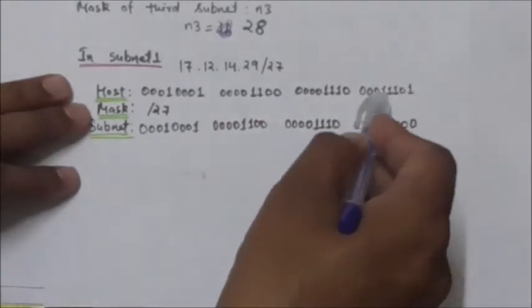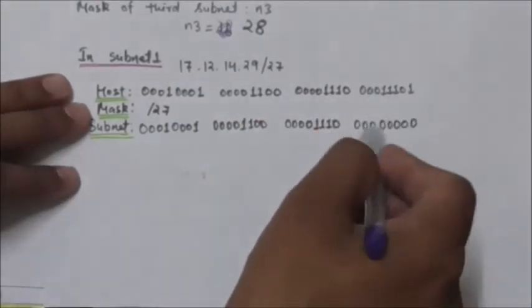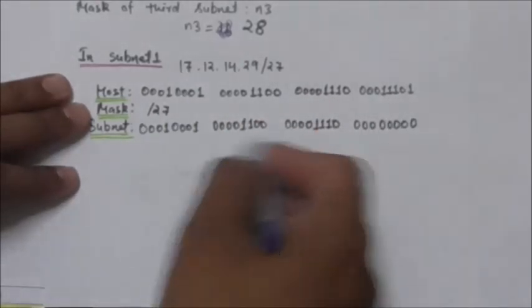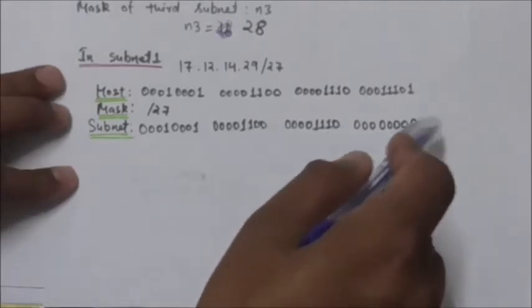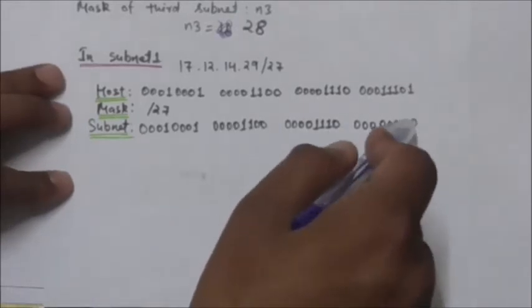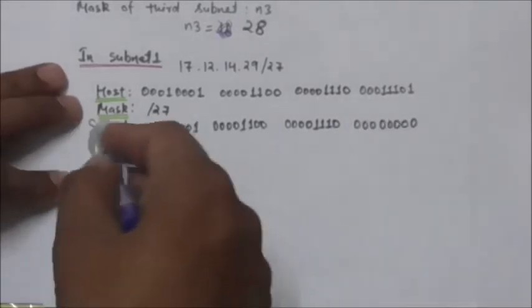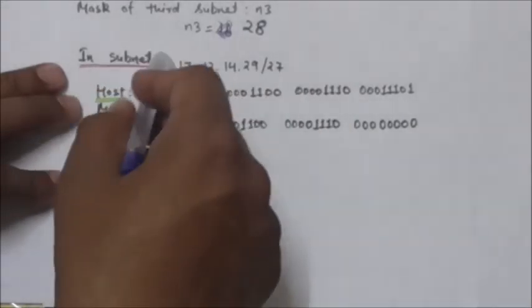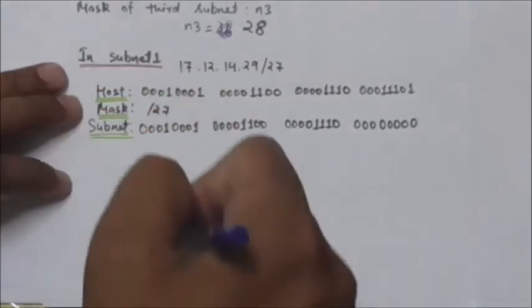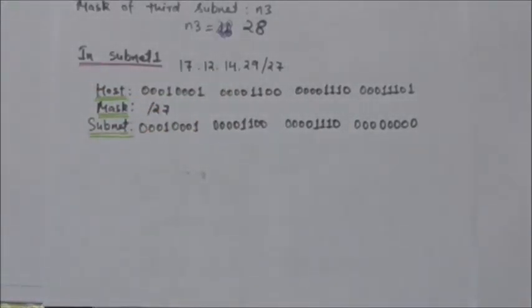When we set the 5 rightmost bits of this address to 0, we get the subnet address of subnet 1. Similarly, we can find the subnet addresses of subnet 2 and subnet 3 using the same method.